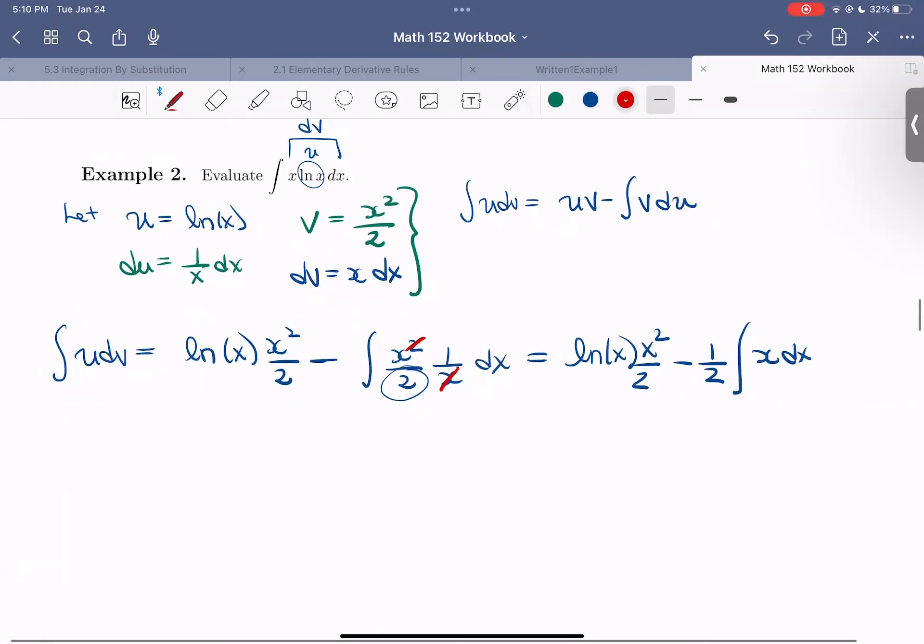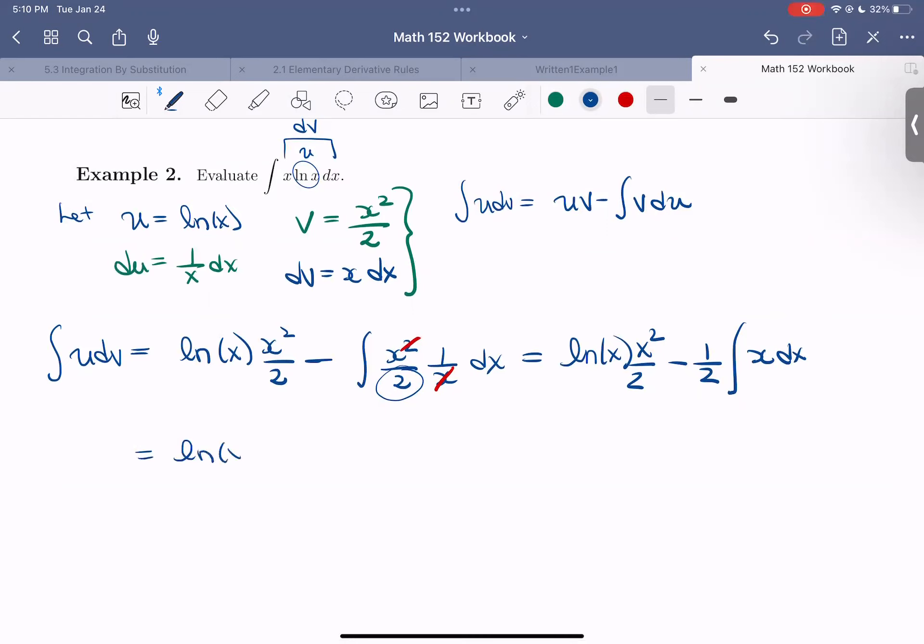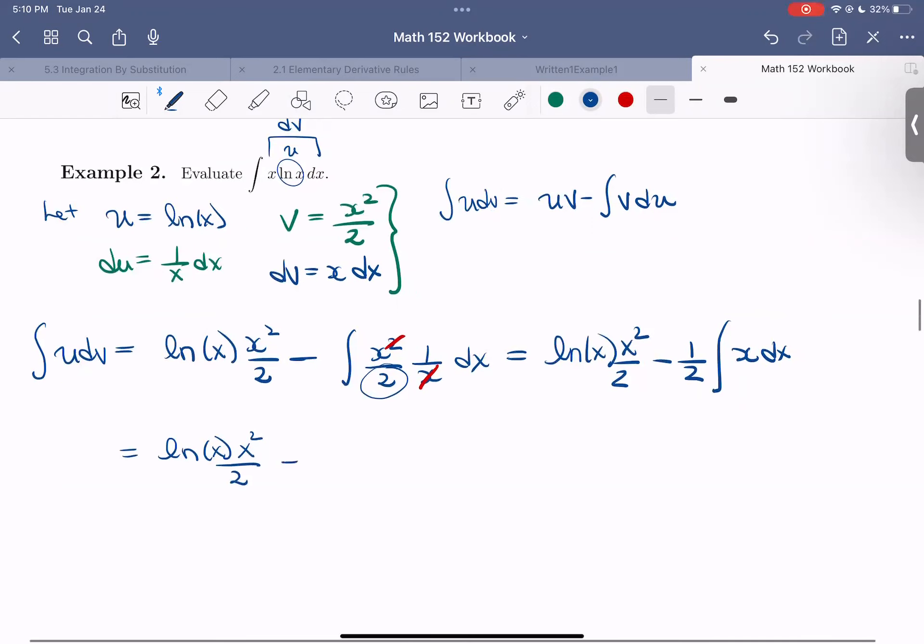So now all we need to do is find the anti-derivative of x, which we know how to do. So that just becomes then ln of x times x squared over 2 minus one half. Anti-derivative of x is just going to be x squared over 2 plus c using that reverse power rule.